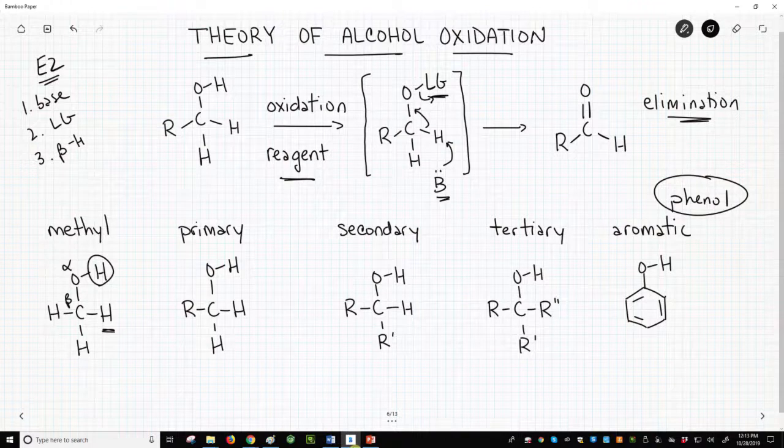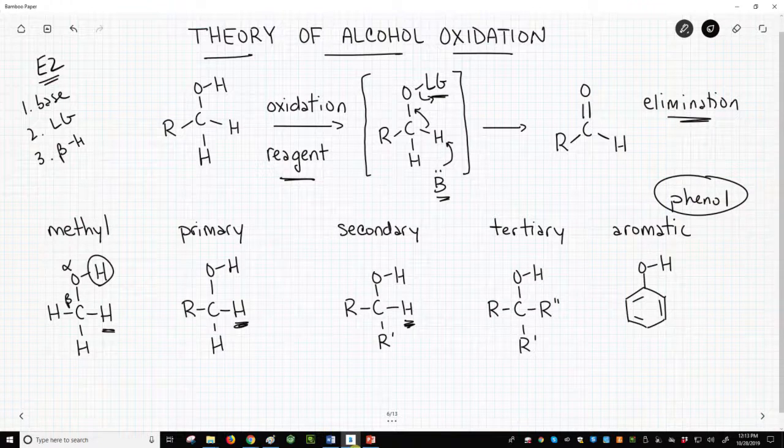The same goes for the primary and the secondary alcohols. Both have a beta hydrogen. The tertiary alcohol, however, does not have a beta hydrogen.